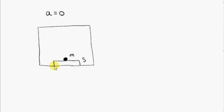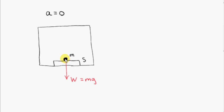Inside the elevator, we have scales S and a particle of mass M resting on the scales. In red, I will show the forces acting on the mass. Obviously we have its weight, which is vertically down. We can call its weight W, and we know that W is equal to mg, where M is the mass.